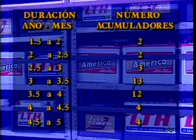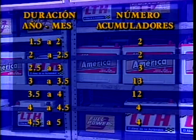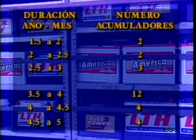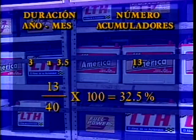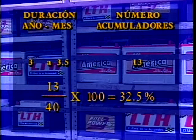Por ejemplo, 2 de los 40 acumuladores tuvieron una duración de año y medio a 2 años. Como podemos ver, algunos no llegaron a los 3 años de uso, y hay algunos que rebasaron ese periodo. Como puede verse en la tabla, 13 de los 40 acumuladores duraron entre 3 y 3 años y medio. Si se quiere saber qué porcentaje representan, basta con dividir 13 entre 40 y el resultado multiplicarlo por 100. El 32.5% de los acumuladores duraron entre 3 y 3 años y medio, representando el porcentaje más alto de duración.